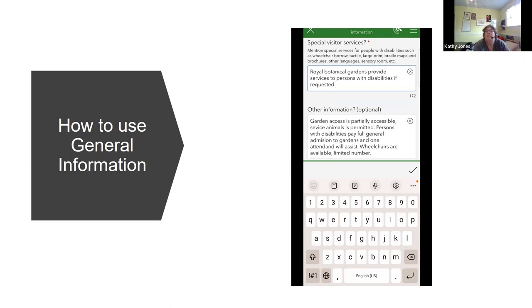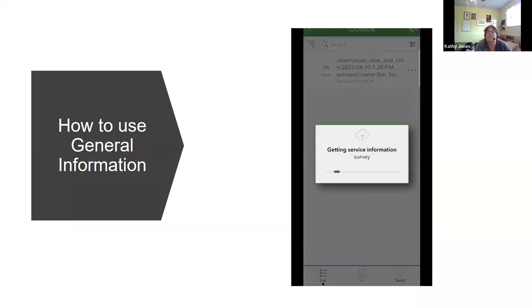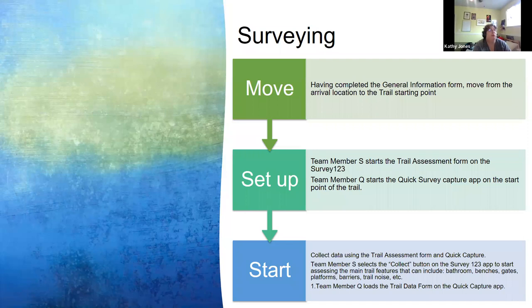The video continues showing additional adjacent parking lot locations being added using the plus sign — you can add more than one location. Public transit access to the site is noted as no. Special visitor programs include nature interpretive programs. The Royal Botanical Gardens provides services to persons with disabilities if requested. Other information collected: garden access is partially accessible, service animals are permitted, persons with disabilities pay full general admission and one attendant will assist, and wheelchairs are available but limited in number.